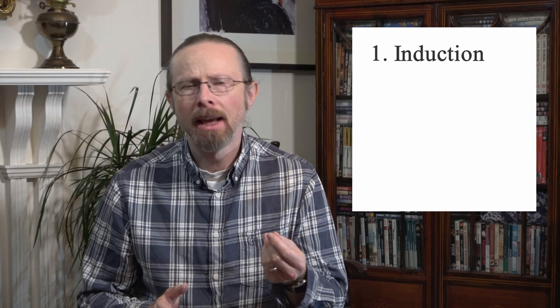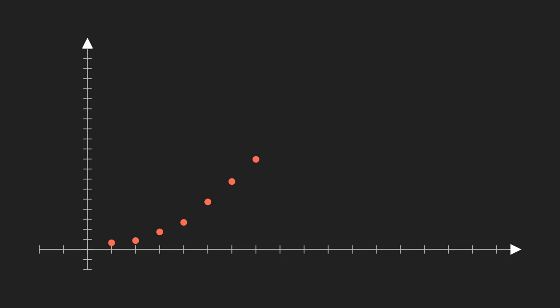The first problem we're going to look at is the basic problem of induction. Imagine you're trying to understand and predict the future progression of some system from a set of data about how that system has behaved so far. The simplest model we could consider is just a linear regression, which would suggest that the system will continue forward roughly along this line.